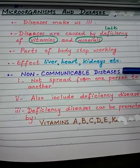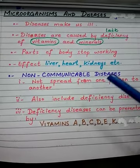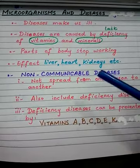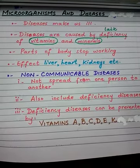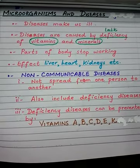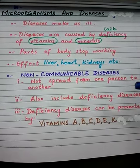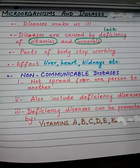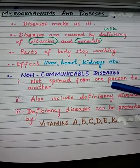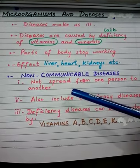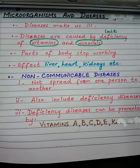You need to understand the meaning of these names. 'Non' means not, and 'communicable' comes from the word 'communication,' which means staying in contact — through contact, talking, or any type of connection. Some diseases are such that they can occur in any person without communication, and those diseases are called non-communicable diseases. The exact definition is: diseases which do not spread from one person to another person are called non-communicable diseases.